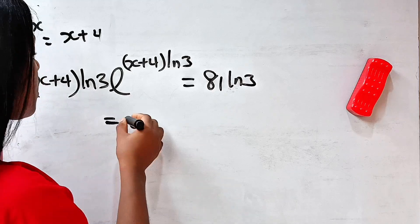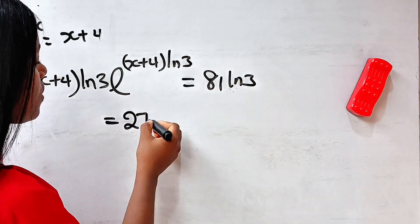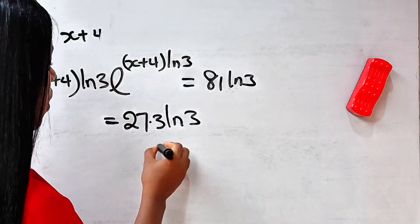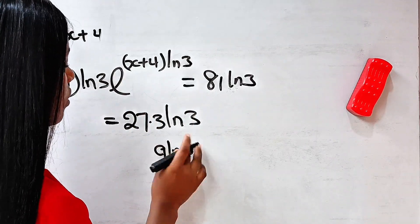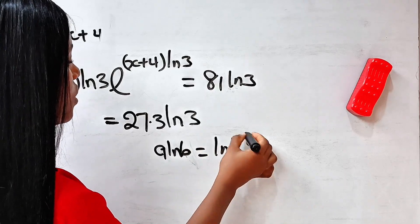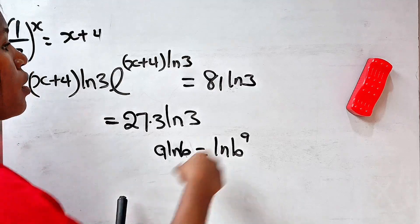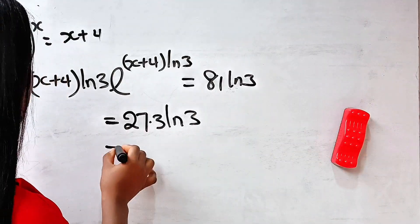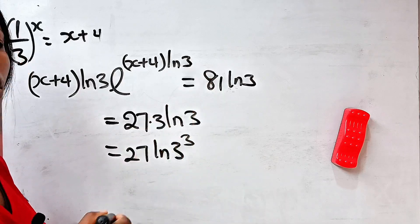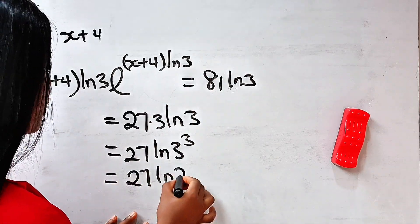Remember that 81 can be written as 27 multiplied by 3. So the right-hand side becomes 27 times 3·ln 3. Remember that A·ln B equals ln(B^A), so the 3 comes up as a power: 27·ln(3^3), which equals 27·ln 27.